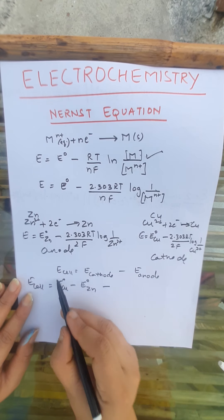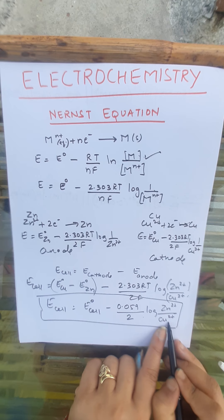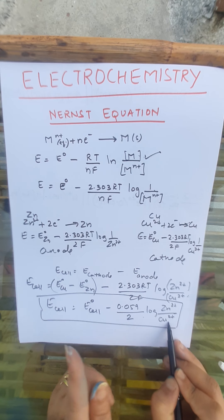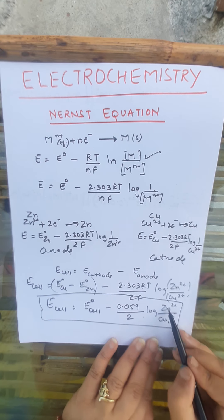Simplifying by putting in values for R and T, we get: E(cell) = E°(cell) minus (0.059/2) times log([Zn²⁺]/[Cu²⁺]). Here, the numerator holds the ion concentration from the product side (or anode), and the denominator holds the concentration from the reactant side (or cathode). This is the final Nernst equation.